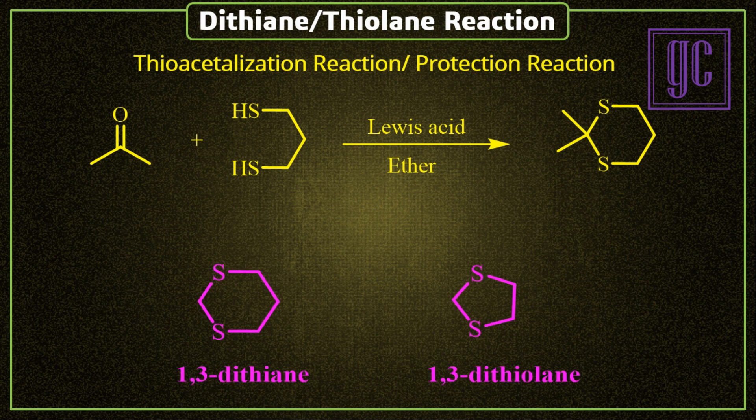If dithiols make a 6-membered ring as product, it is known as 1,3-dithiane. If dithiols make a 5-membered ring as product, it is known as 1,3-dithiolene.